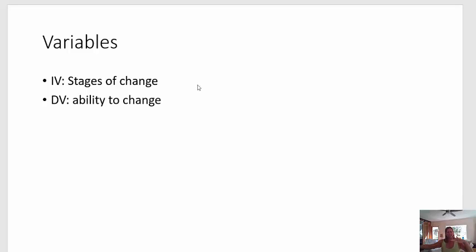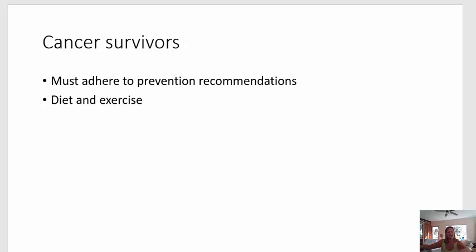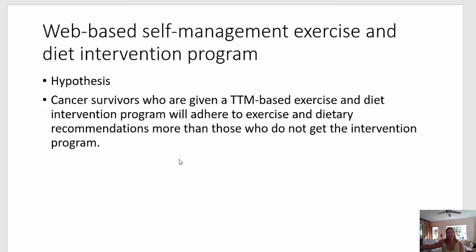The variables of this theory are the stages of change — whatever stage you're in will determine your dependent variable or outcome variable, determining if you can change or not. I'm thinking this might work well in a population of older adult cancer survivors who have specific recommendations for cancer survivorship care plans that include changing behavior, such as maintaining a healthy weight and getting the recommended amount of exercise. My hypothesis could state that cancer survivors given a Trans-Theoretical-based exercise and diet intervention program — that's my I — the cancer survivors being the P — will adhere to exercise and dietary recommendations, which is my outcome variable.